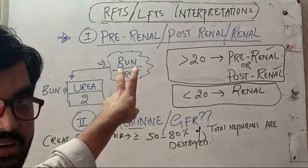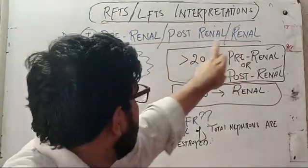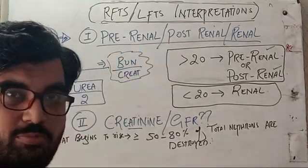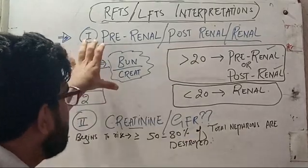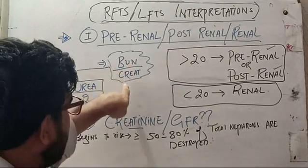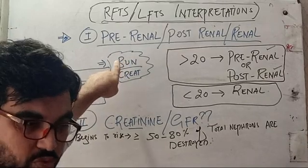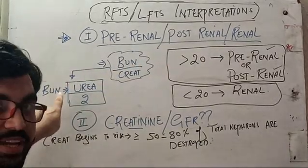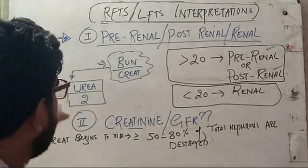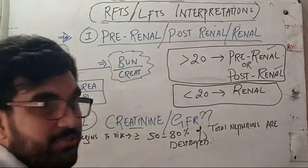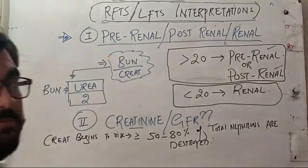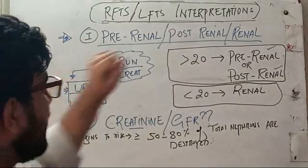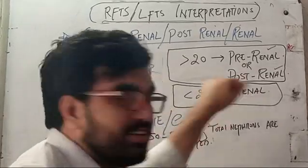In deranged RFTs you have urea and creatinine. To determine whether the problem is renal (kidney), post-renal (ureter, bladder, urethra), or pre-renal (vascular system), we use the BUN-to-creatinine ratio. In our labs the report shows urea, not BUN, so convert urea to BUN by dividing urea by 2. Then divide that BUN value by creatinine. If the ratio is more than 20, it is either pre-renal or post-renal; if less than 20, it is renal.